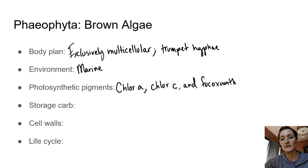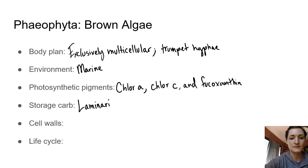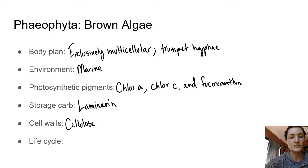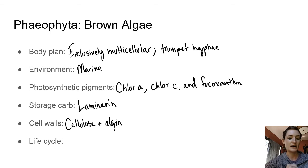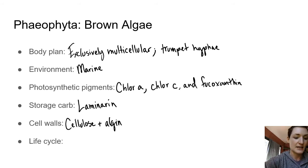Brown algae also have fucoxanthin, a type of carotenoid that makes brown algae brown. Storage carbohydrates are laminarin. In the cell walls they have cellulose, similar to plants and also similar to oomycetes, plus a compound called algin, which helps brown algae not dry out — it's a mucilaginous substance within the cell walls that retains moisture, useful for living in the intertidal area. The life cycle is diplontic.